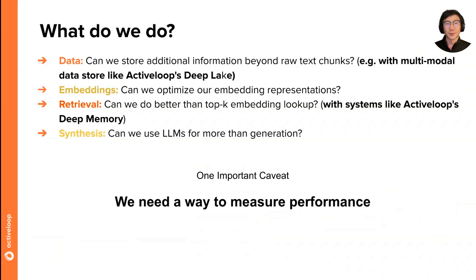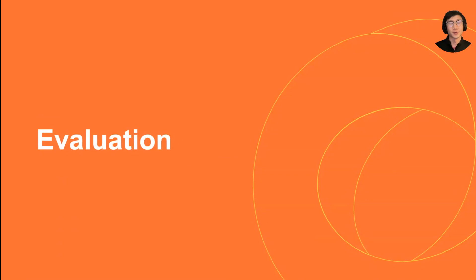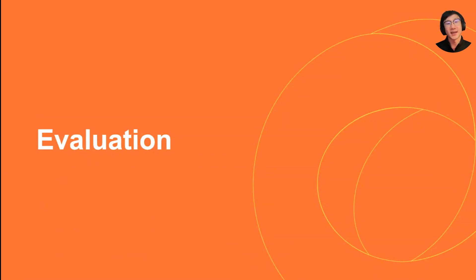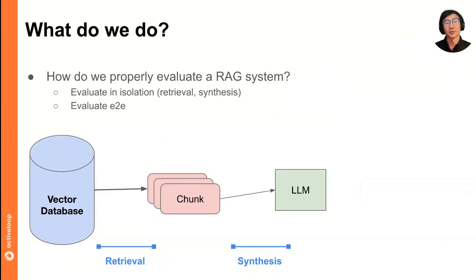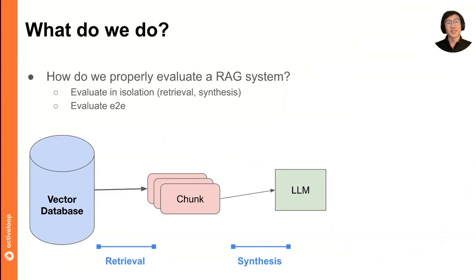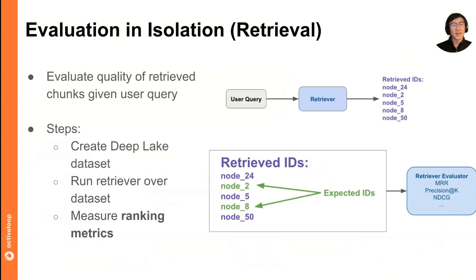The natural segue here is that we need a way to actually measure performance. We'll spend a few slides talking about evaluation and how to evaluate your retrieval augmented generation applications. A key part of building a production-grade RAG application is figuring out how to evaluate it, so you can measure performance and benchmark improvements quantitatively. You can evaluate in isolation — taking different stages of the RAG pipeline like retrieval and synthesis and evaluating them independently — or you can evaluate the entire system end-to-end.